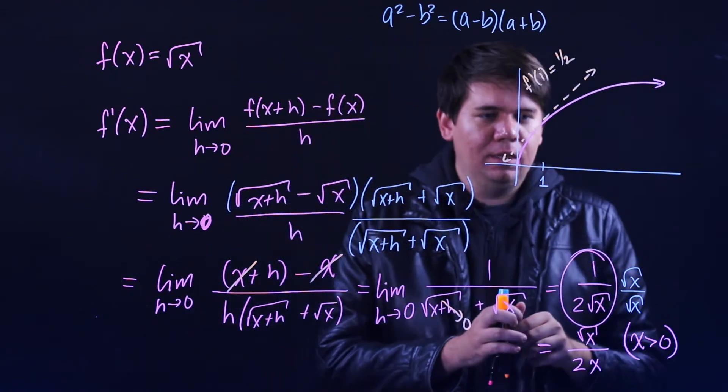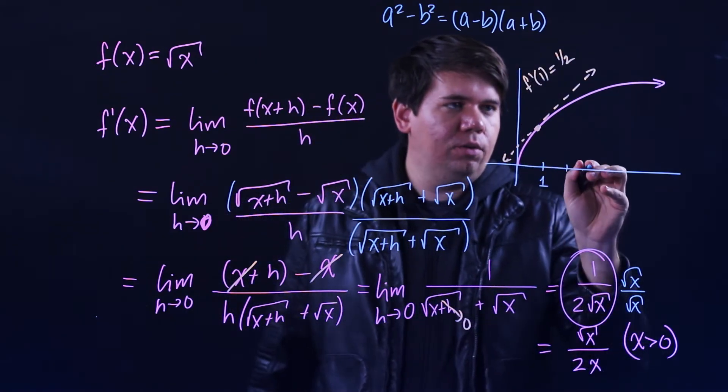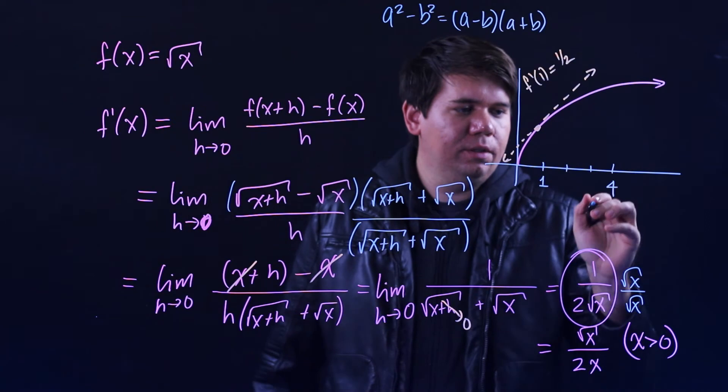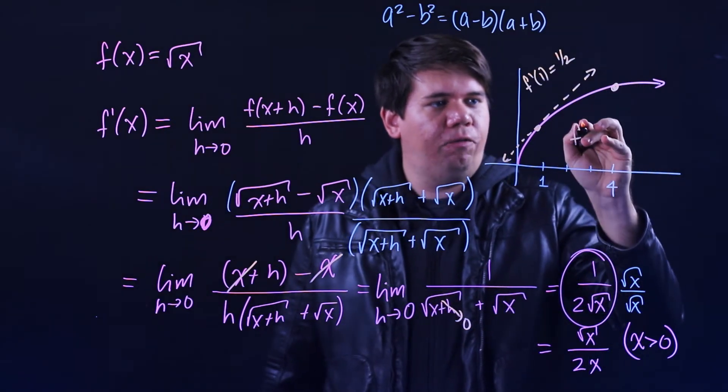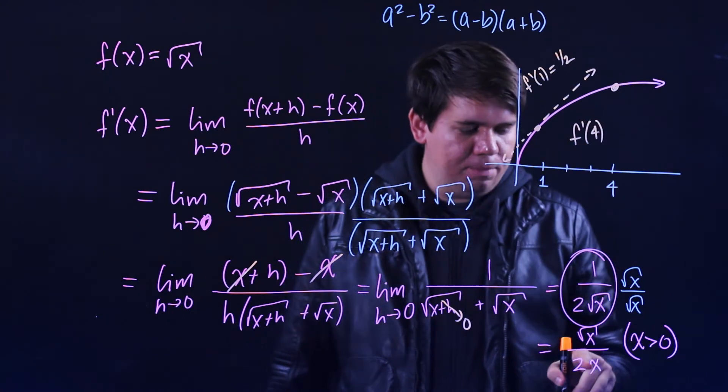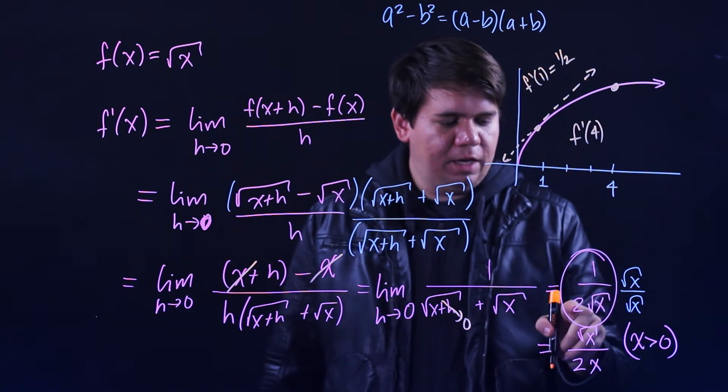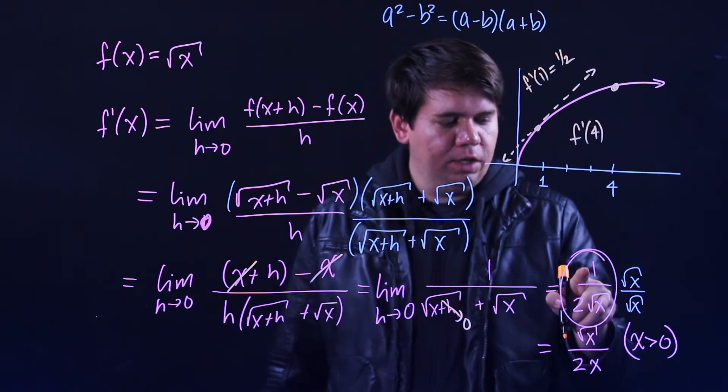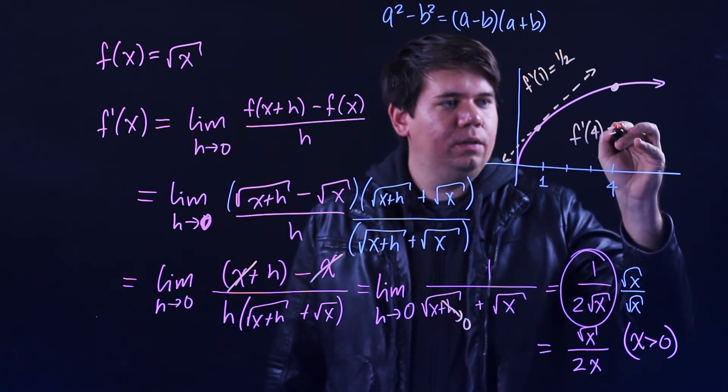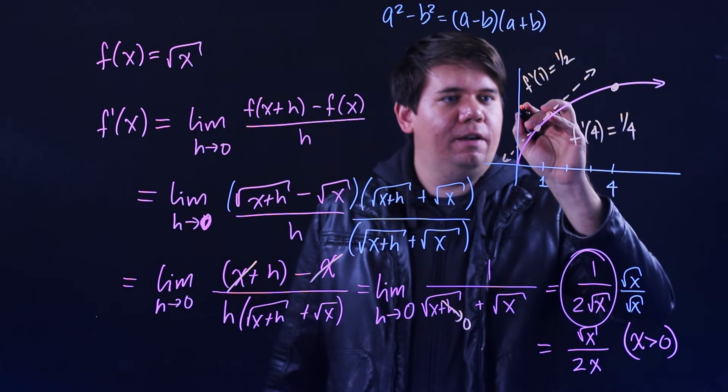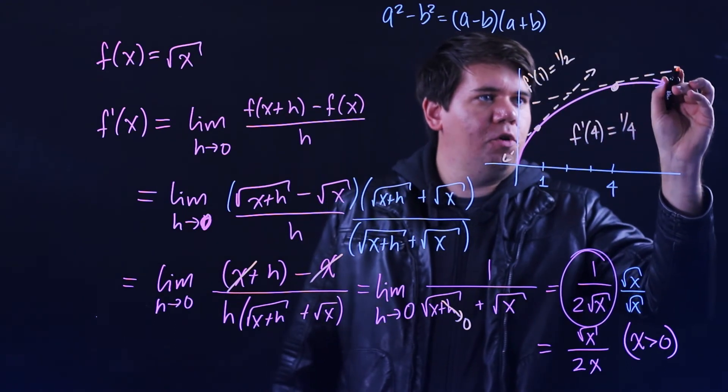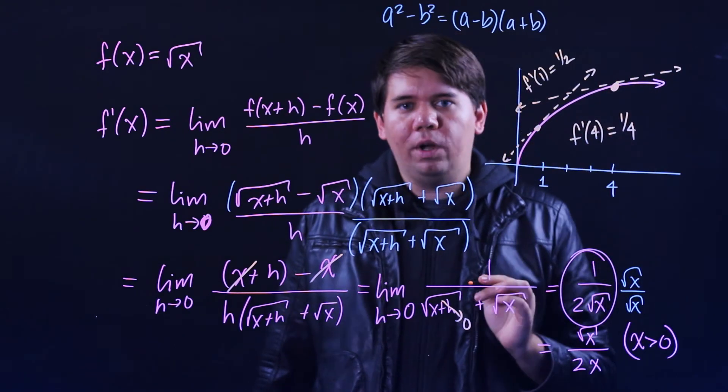What if we jump further out, let's move out to 4. What's going on at 4? f prime of 4 is 1 divided by 2 times the square root of 4, that's 1 fourth, which agrees with the tangent line with slope 1 fourth.